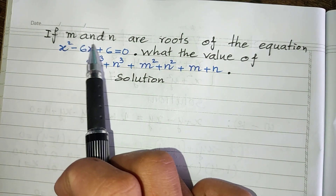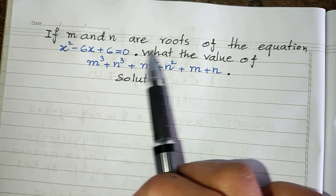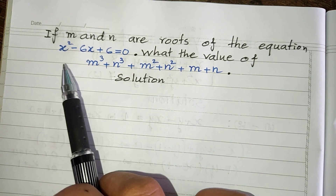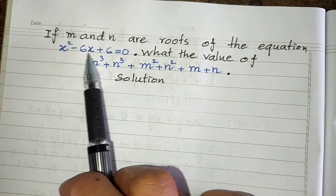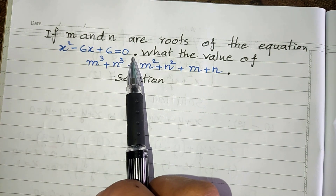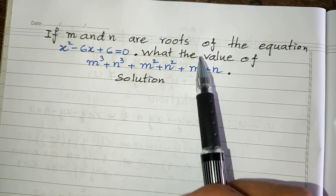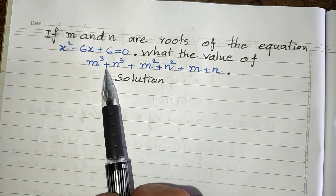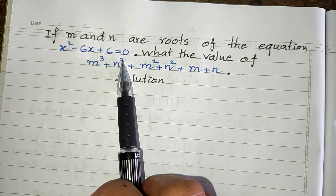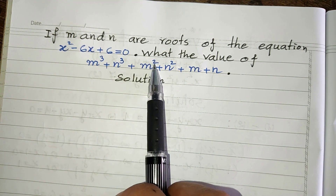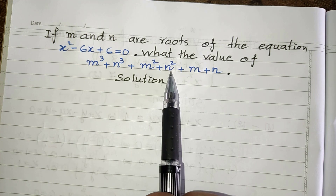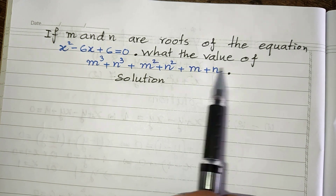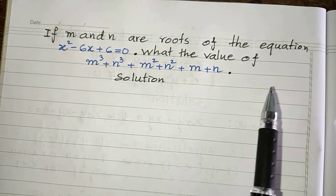If m and n are roots of this equation, x squared minus 6x plus 6 equals 0, what are the values of m cubed plus n cubed plus m squared plus n squared plus m plus n? Do you know how to solve this?